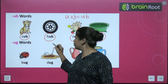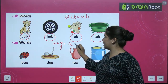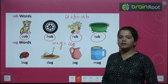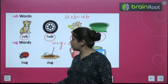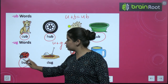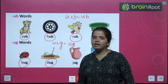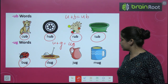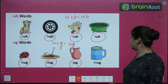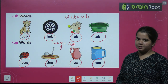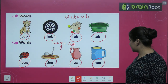Now we have U plus G words — words where the end sound is -ug. Let's read: B-U-G, bug. D-U-G, dug. J-U-G, jug. M-U-G, mug. Is it clear to everyone? Very good.